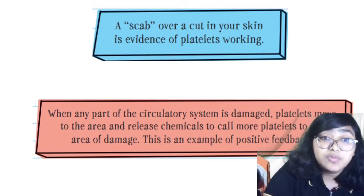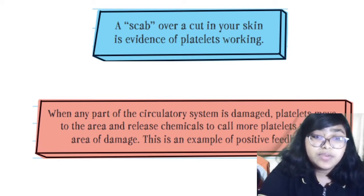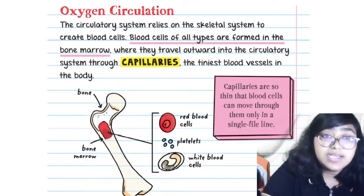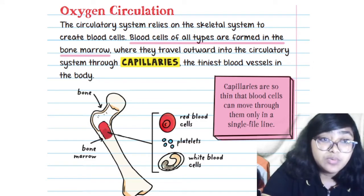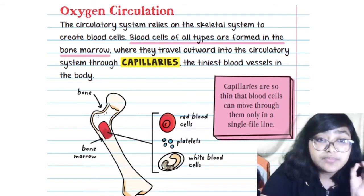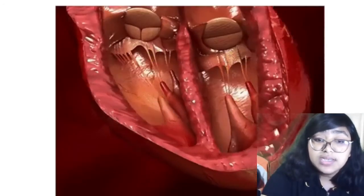When any area of the circulatory system is damaged, the platelets move to that area and release chemicals to call more platelets. Platelets act as a repair force whenever you get cuts, bruises, or wounds. The circulatory system also relies on the skeletal system to create blood cells — all blood cell types are formed in the bone marrow and travel outward through the circulatory system to the capillaries, which are the tiniest blood vessels in the body.